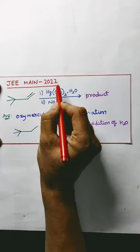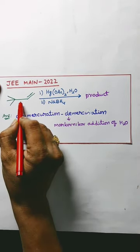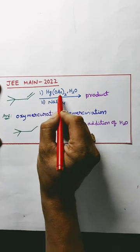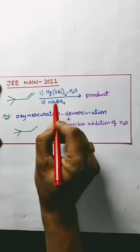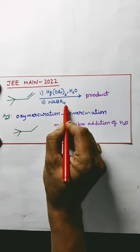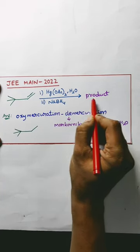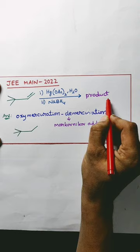JMA 2022. This reactant reacts with mercuric acetate, water, and sodium borohydride to give the product. Find out the product.